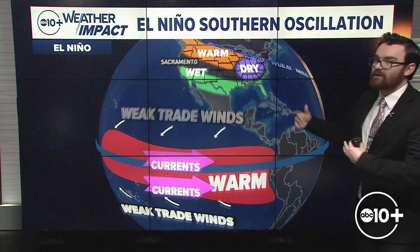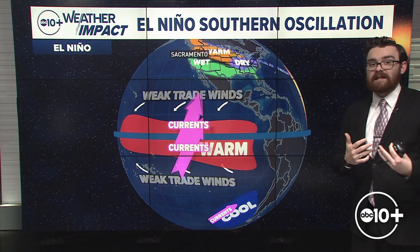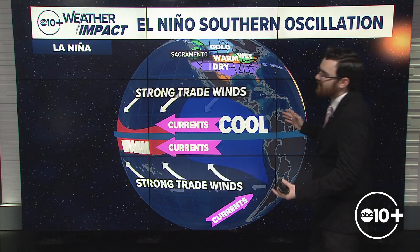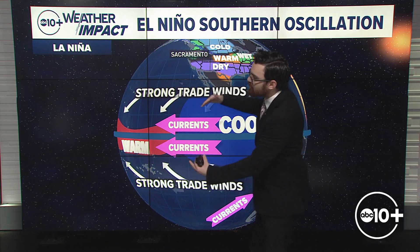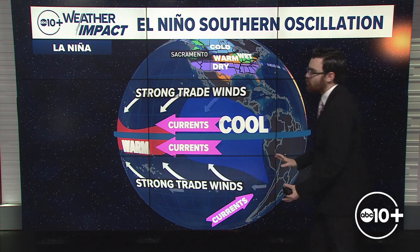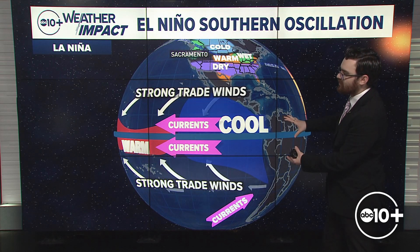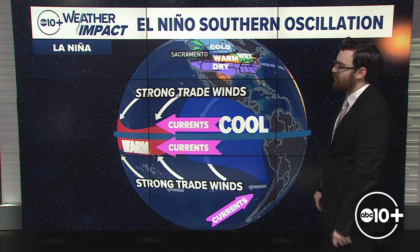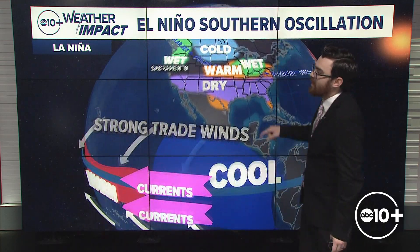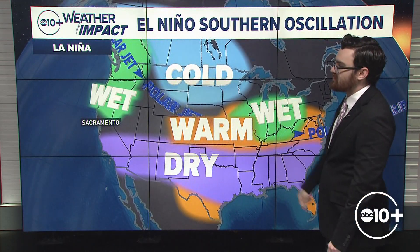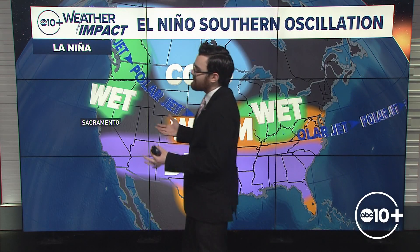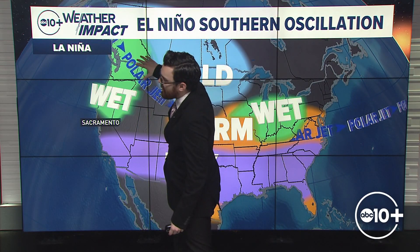Let's zoom back out and talk about the opposite of El Niño, and that is La Niña. During La Niña, we've got stronger trade winds, which push the cooler water that upwells off the coast of South America further out across the equatorial Pacific. This also has an impact on what we typically see here in North America.